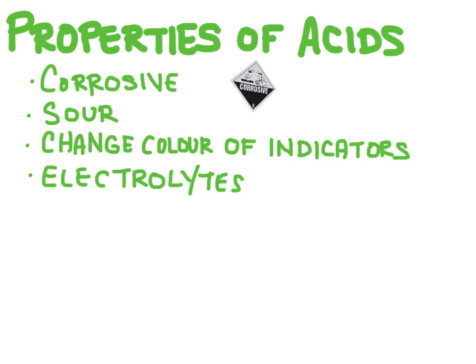They also have a sour flavor. An example of this is citric acid, which is what makes lemon sour. They're also able to change the color of chemical indicators. These are dyes that change color depending on what kind of substance they're in contact with. An example is that an acid is going to turn litmus paper red.